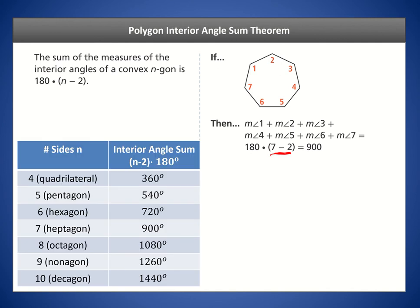Let's look at a chart for the various polygons: quadrilateral (4 sides), pentagon (5), hexagon (6), heptagon (7), octagon (8), nonagon (9), and decagon (10). For the interior angle sums: a quadrilateral has two triangles, a pentagon has three, a hexagon has four, and so on — as the number of sides increases you get an extra triangle, and you multiply that by 180 to get your interior angle sum.